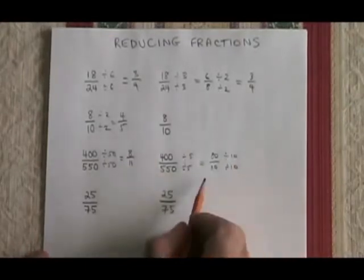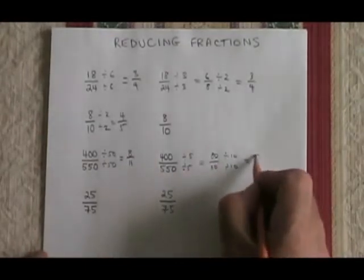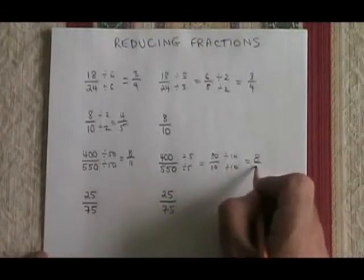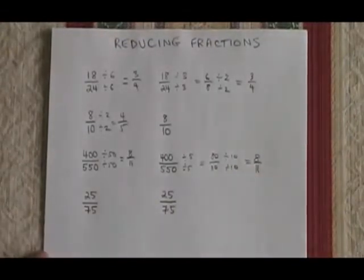So I'm not finished. I'm going to keep going. 80 divided by 10 is equal to 8. 110 divided by 10 is equal to 11. And I have the correct answer, 8 elevenths, again.